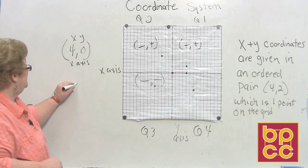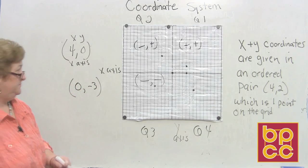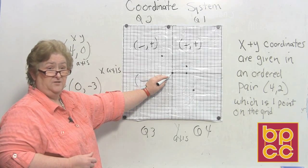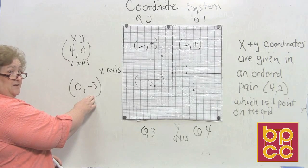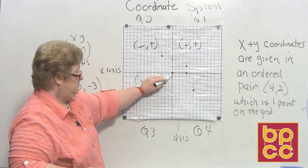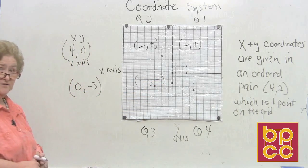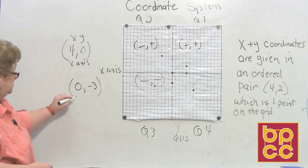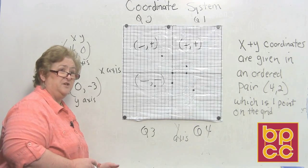What about (0, -3)? Start at the origin — the x says move zero, so stay put. Then move down three on the y. The point lands on the y-axis because we didn't move off the x-axis. So that's going to be your y-axis.